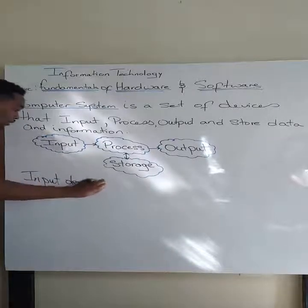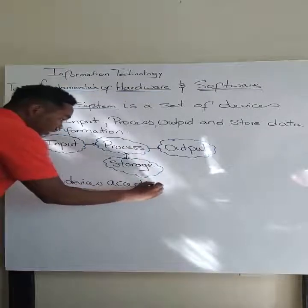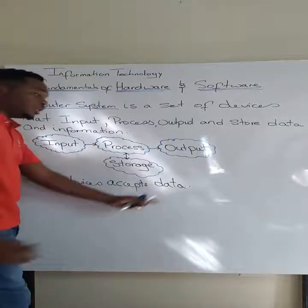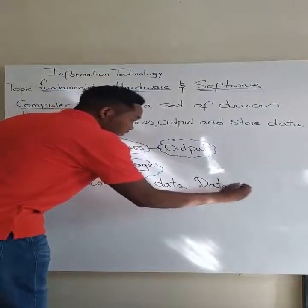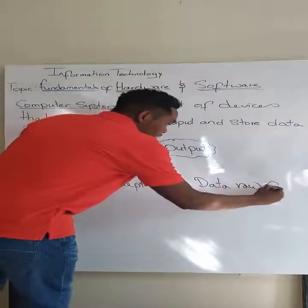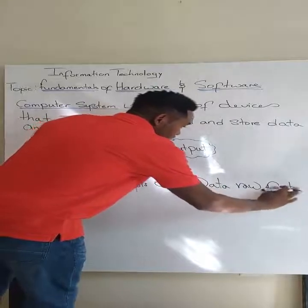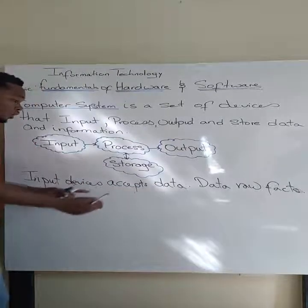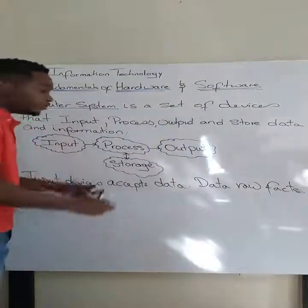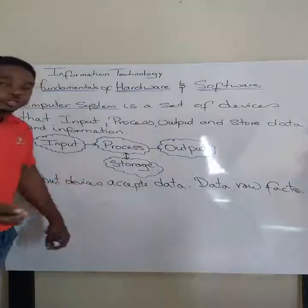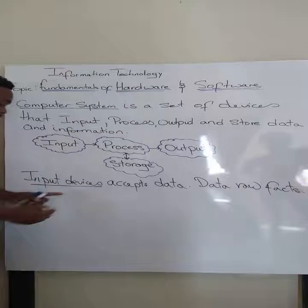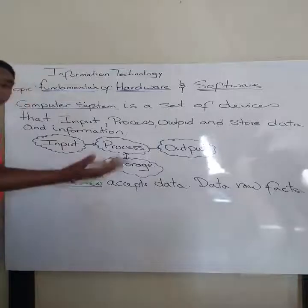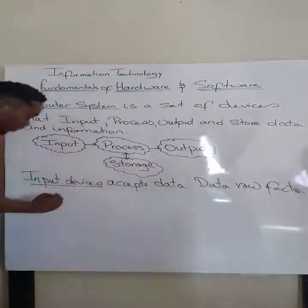Let us look at devices that handle input for a computer system. Input devices are devices that accept data — and the data we are speaking of is raw. We need devices that are going to accept data from human entry or from other sources, devices that allow us to input such data.